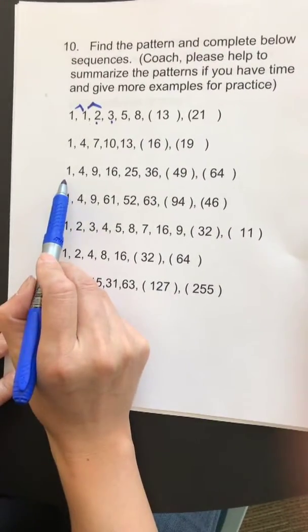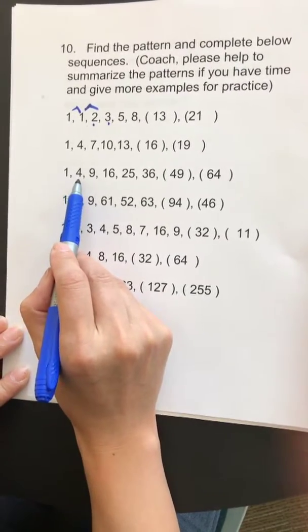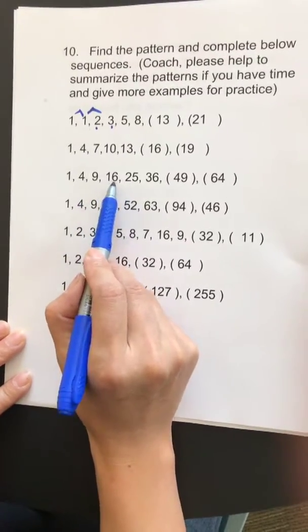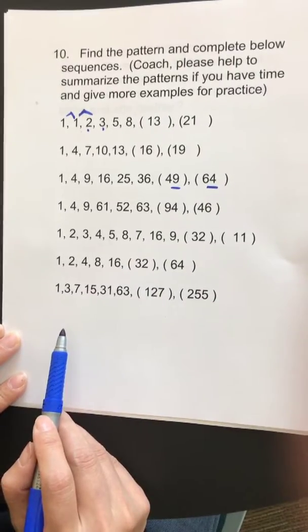And for sequence number three, these are the perfect square numbers, right? Two squared, three squared, four squared, and so on. Then you fill in the last two numbers.